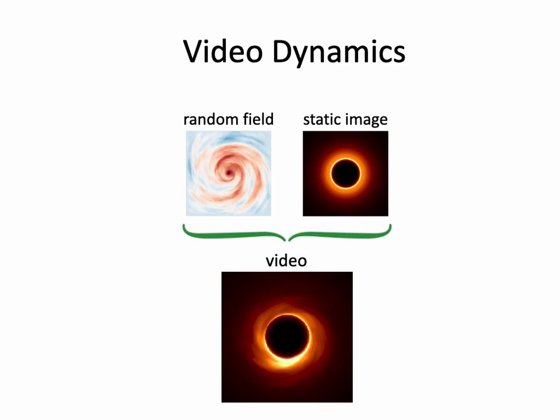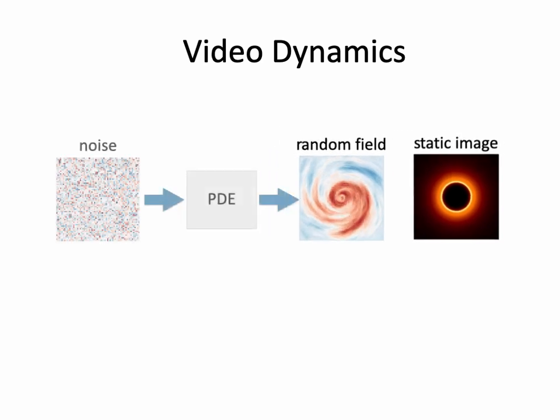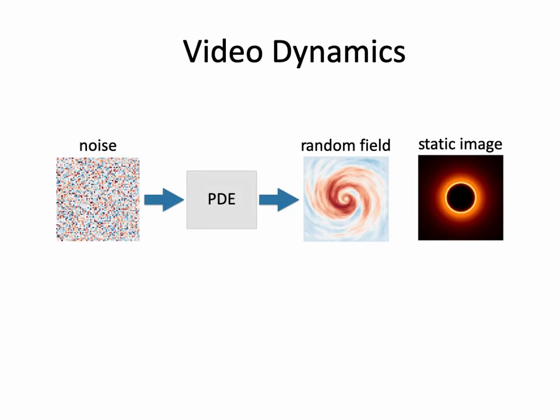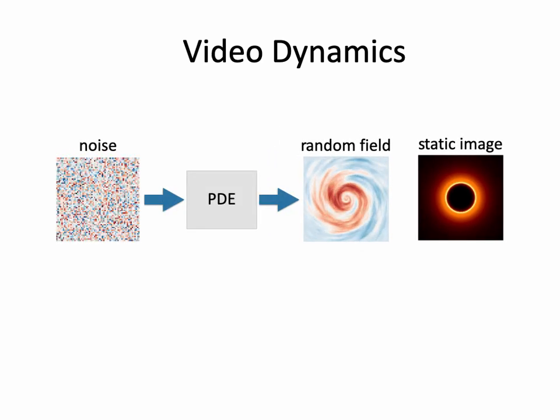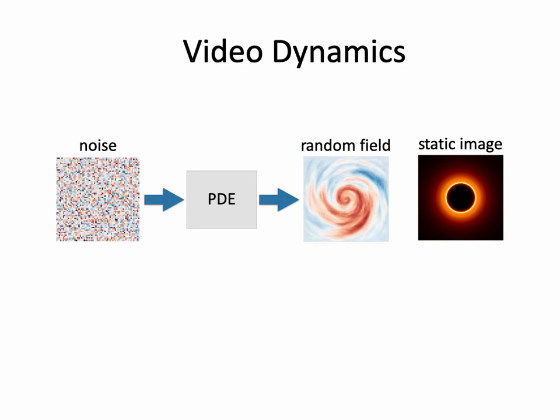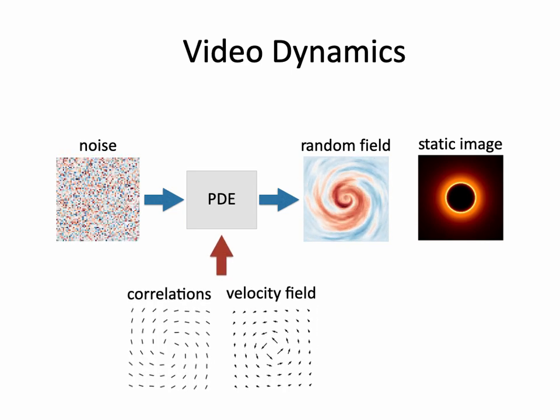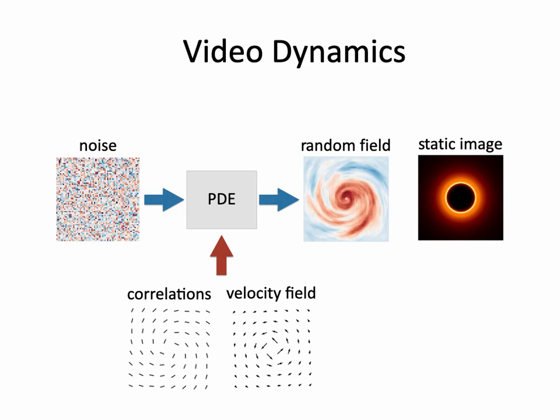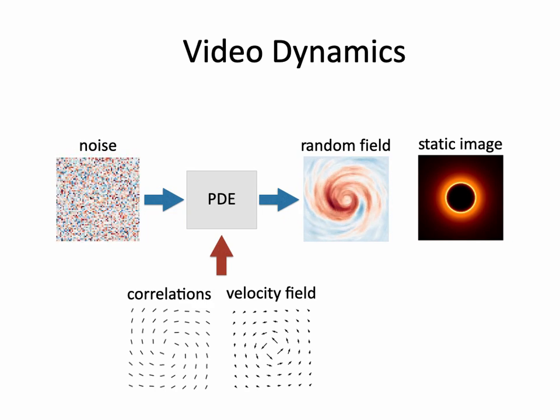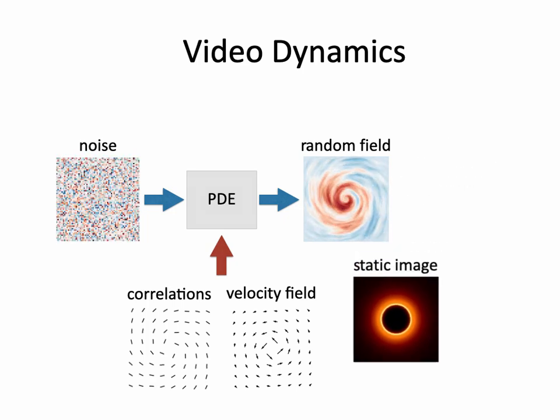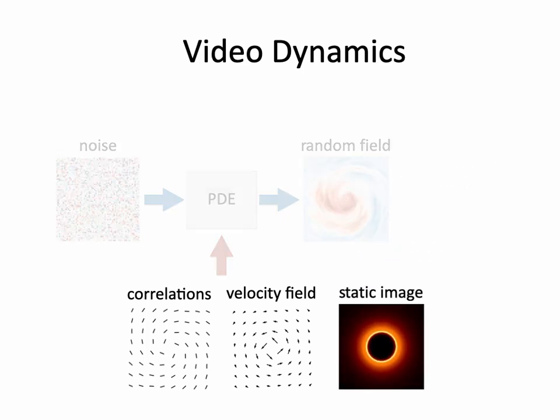We model a video as a composition of a static image and random dynamics. The random dynamics are given as a solution to a stochastic partial differential equation, which is parameterized by the correlation and velocity fields we just discussed. In the inverse problem, we jointly estimate these three unknown fields: the spatial correlations, velocity and static image.